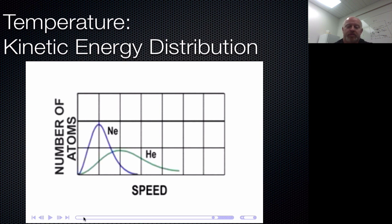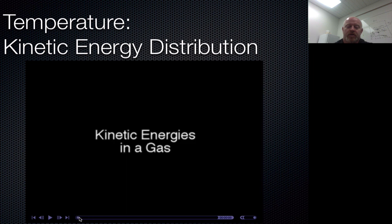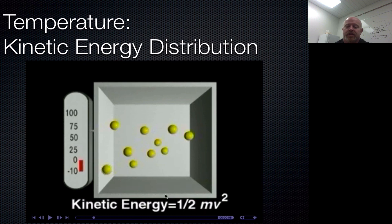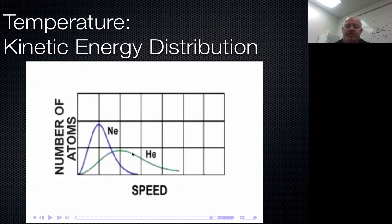Going back to the kinetic energy equation shown earlier in the video: kinetic energy depends on both velocity and mass. Things that are heavier move slower to generate the same amount of energy as things that are lighter. Lighter things need to move faster to generate the same amount of energy. That's why helium must be moving faster to have the same kinetic energy as neon at the same temperature.